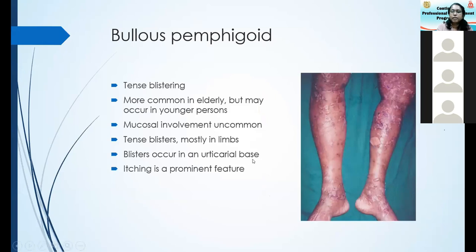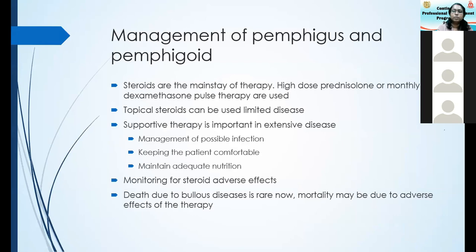Sometimes there may be an urticarial base. Bullous pemphigoid is more common in the elderly, but we have seen it even in patients in their 30s and 40s in Sri Lanka. How do we manage pemphigus and pemphigoid? Both conditions are best managed in a hospital setting as inpatients unless it's very limited disease — initially to start the treatment we usually admit them.